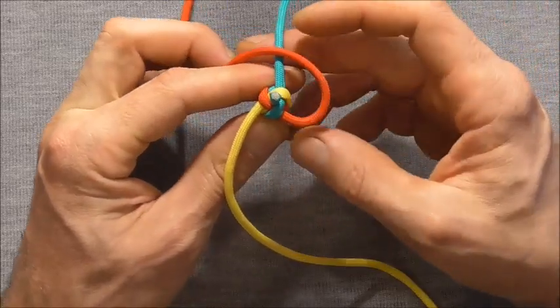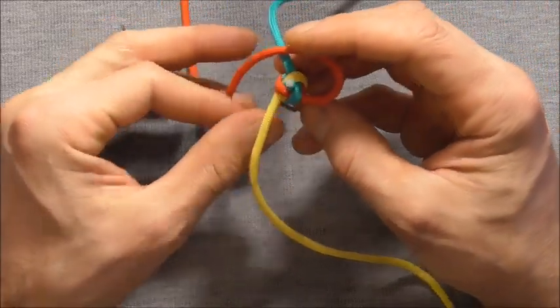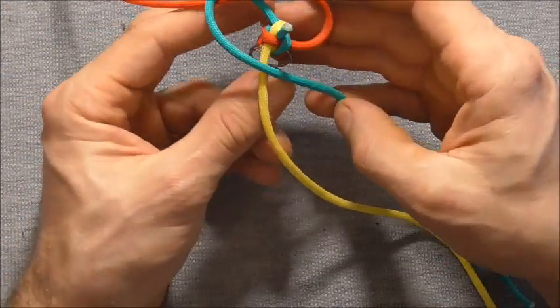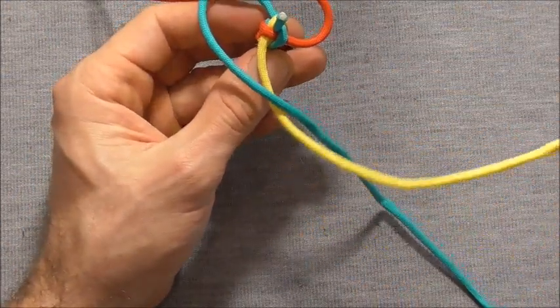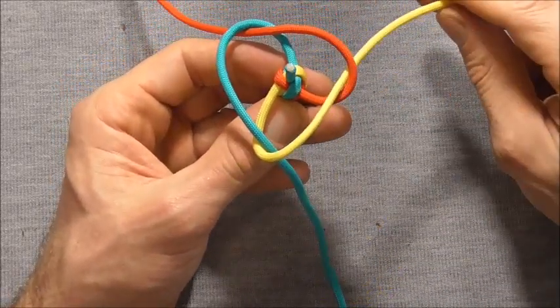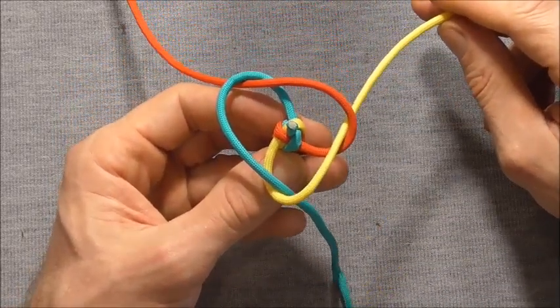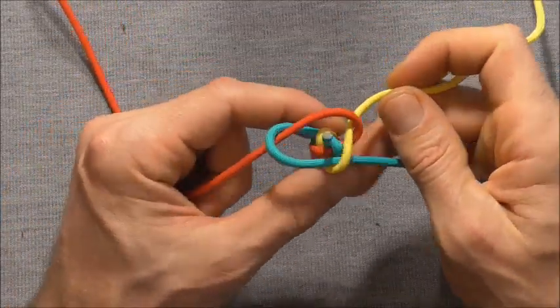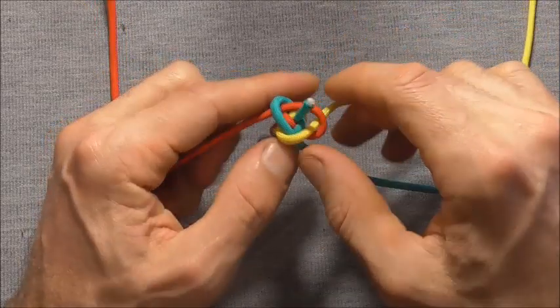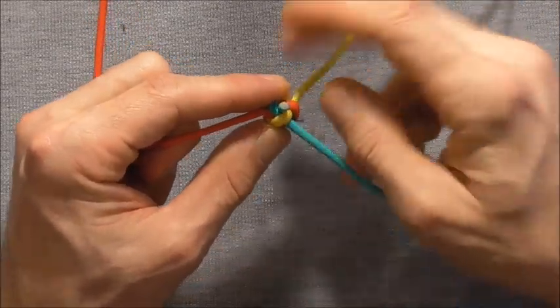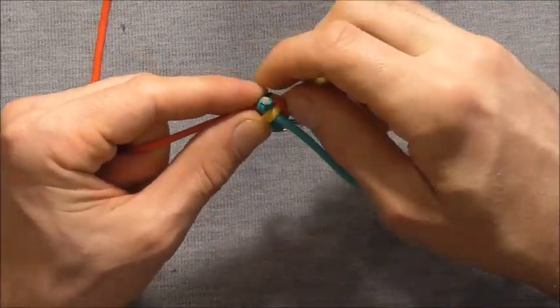Now going anti-clockwise we will take one strand over, the next strand over, and the last strand will tuck through the original loop. And then we can tighten the whole thing up. And we just need to continue that process until we get the keychain to the desired length.